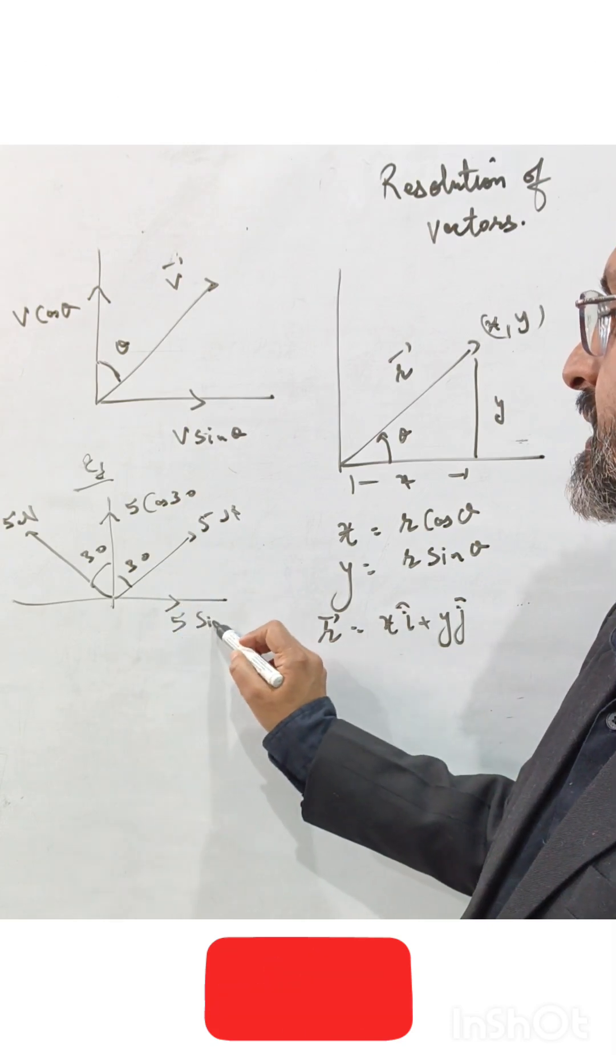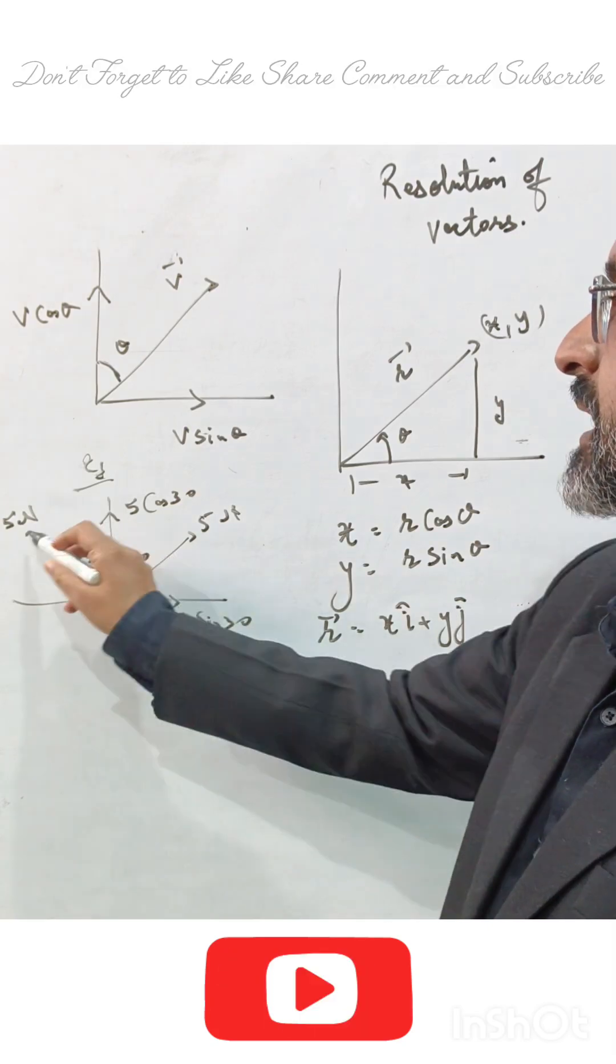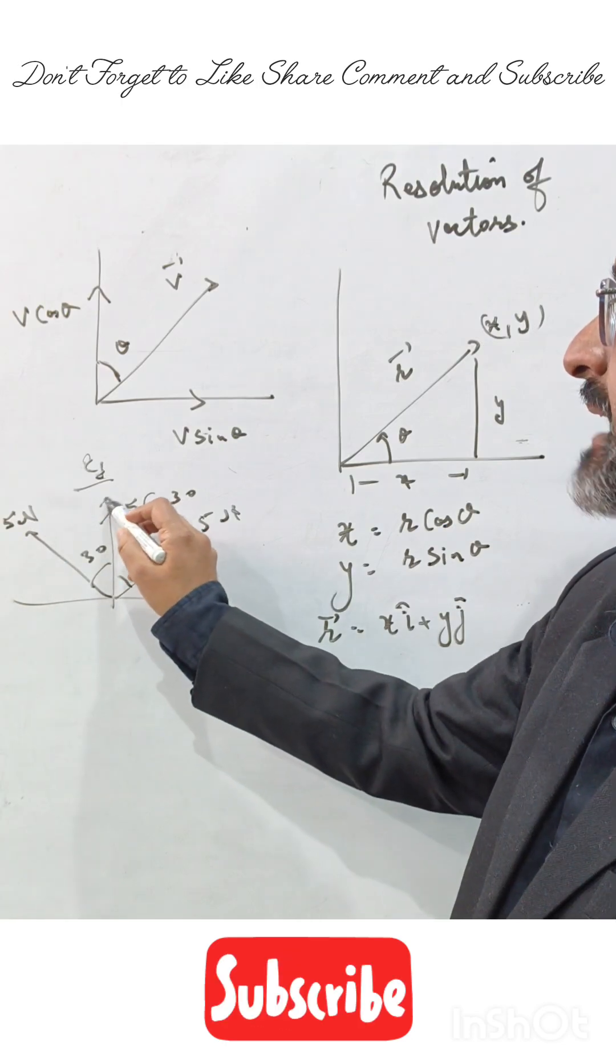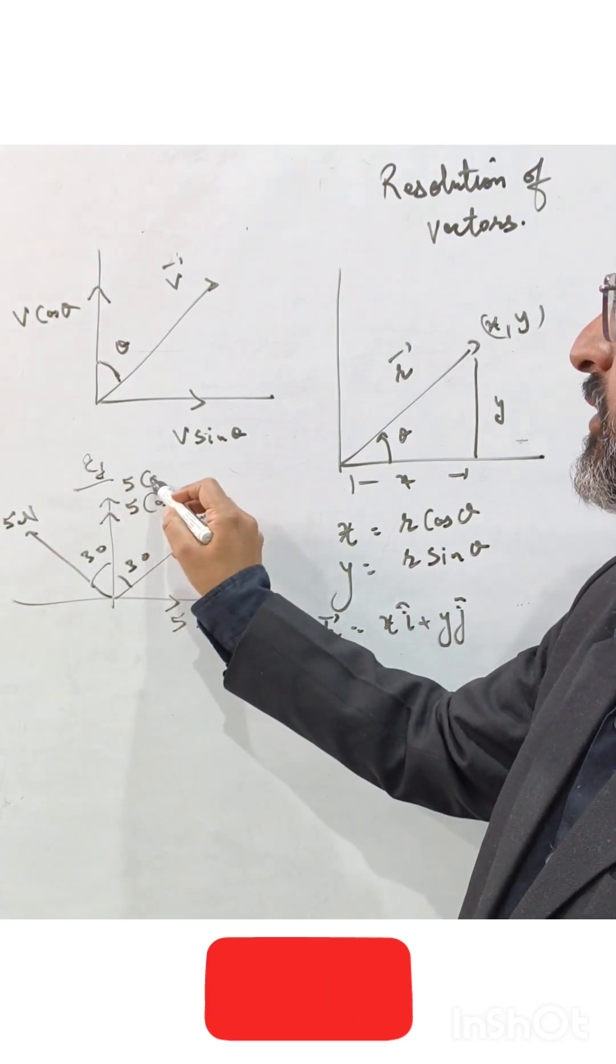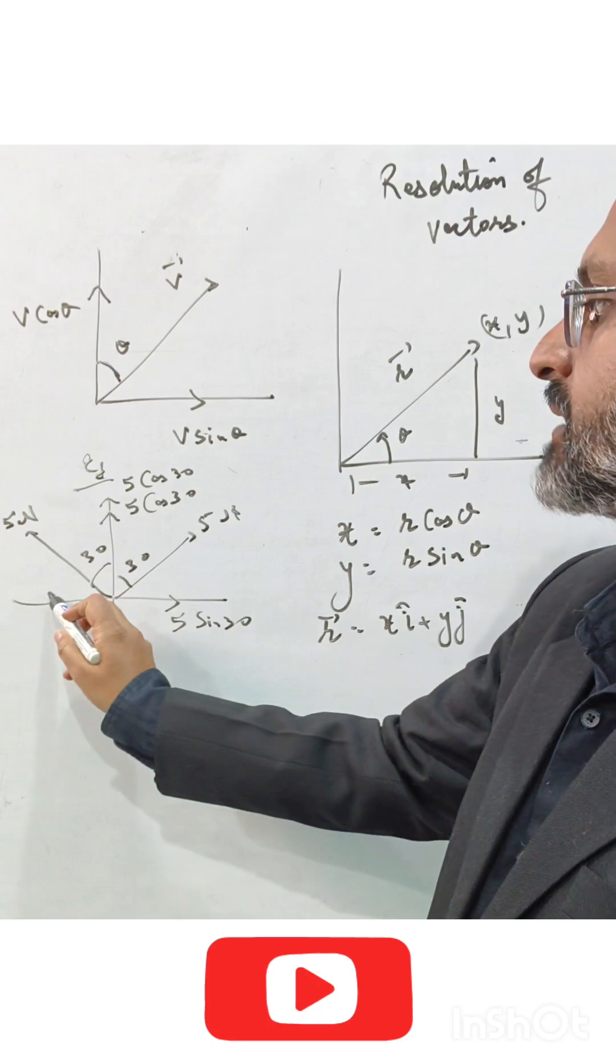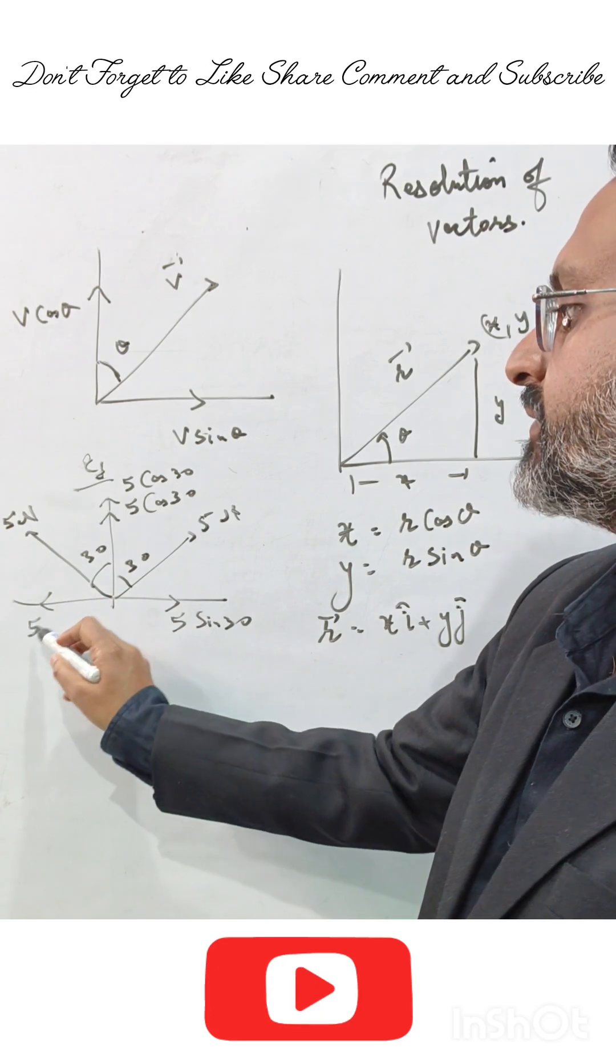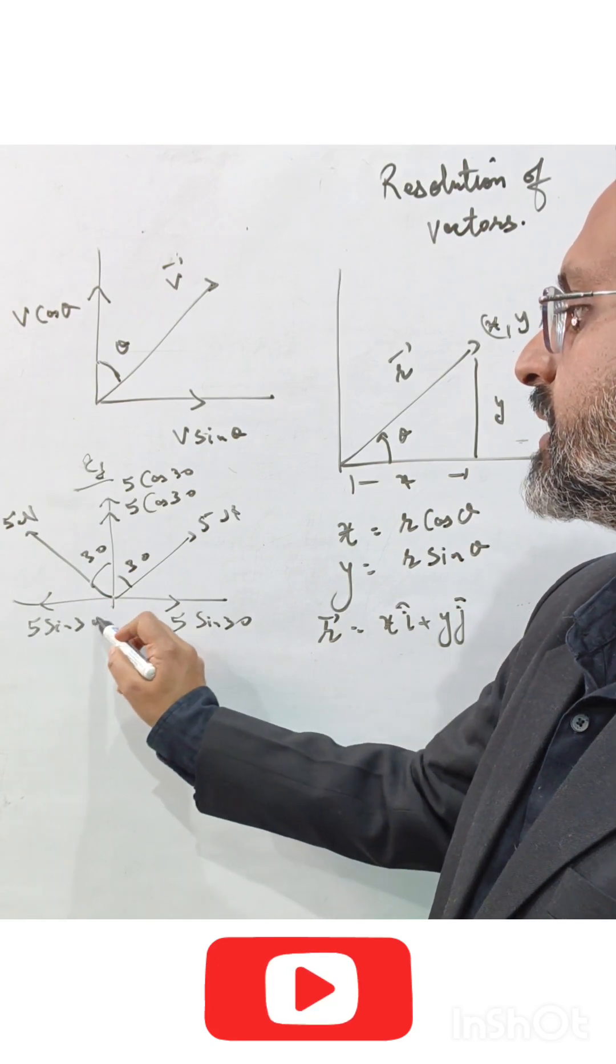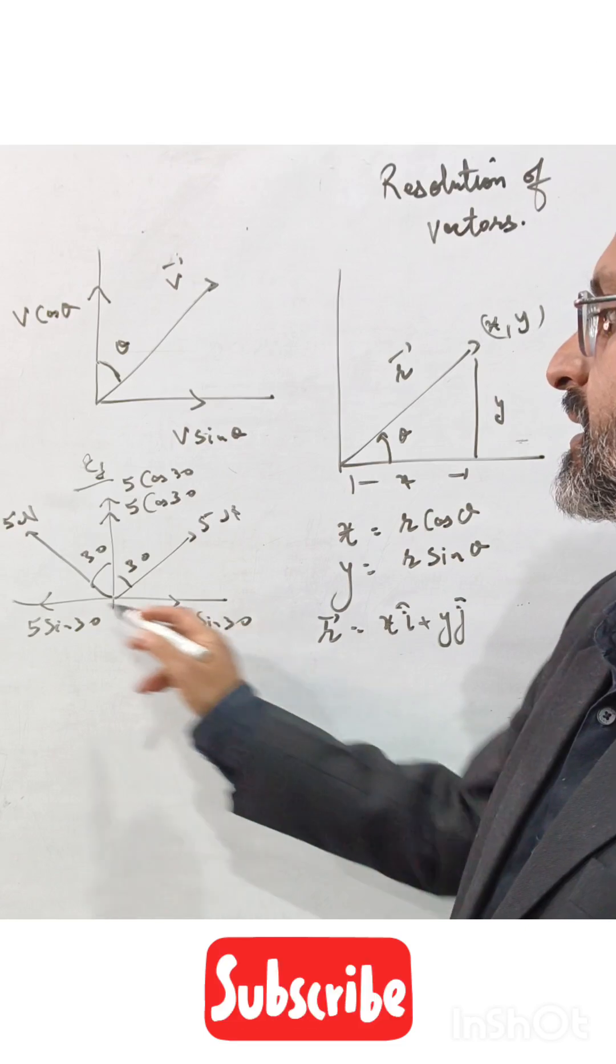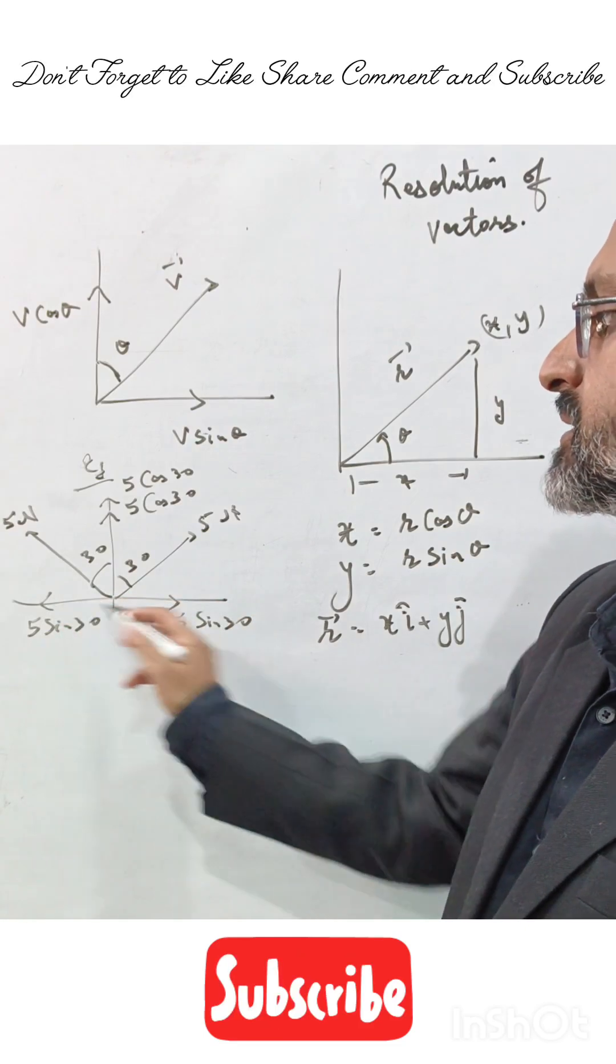Similarly, the component of this force along this axis will be five cos 30, and this will be five sine 30. So five sine 30 and five sine 30, they both are equal and opposite and will cancel out each other.